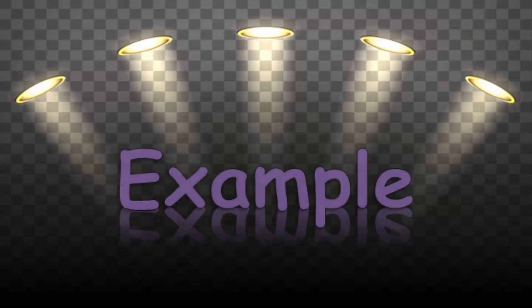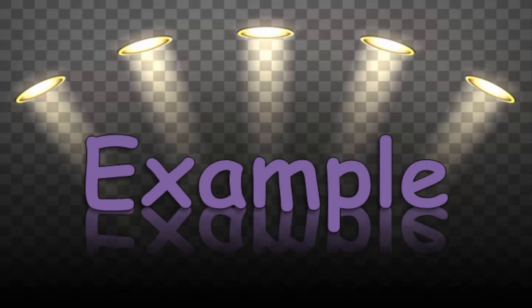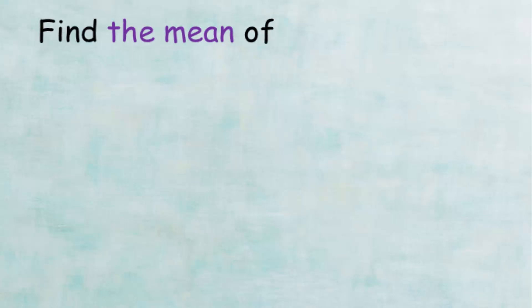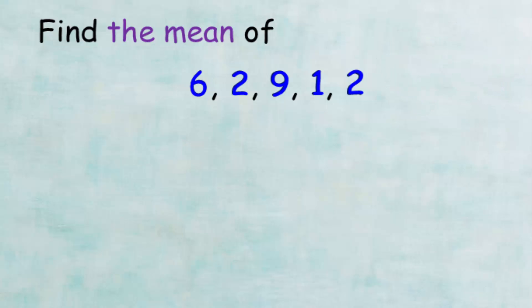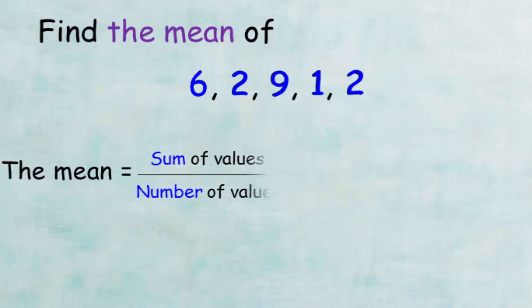Now let's see an example of how to calculate the arithmetic mean. In this example, we want to calculate the arithmetic mean of the values 6, 2, 9, 1, and 2. First, let's count how many numbers we have: 1, 2, 3, 4, 5 — so the number of values is 5.